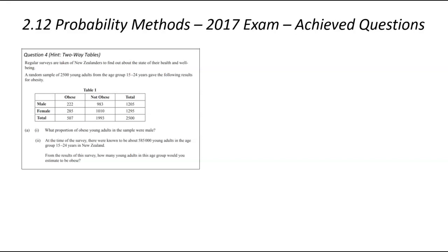And you can have a look, we've got a two-way table. It's comparing obese versus not obese, and male versus female, and it looks like it's from a sample of 2,500 adults, or young adults between 15 and 24. Our first question, what is the proportion of these young adults that are male?